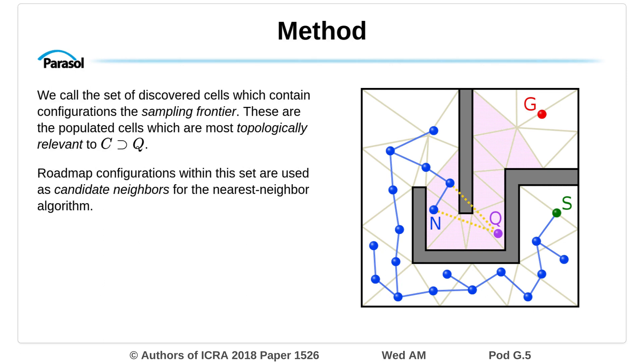We call the set of discovered cells which contain configurations the sampling frontier. These are the populated cells which are most topologically relevant to C containing Q. Roadmap configurations within this set are used as candidate neighbors for the nearest neighbor algorithm.